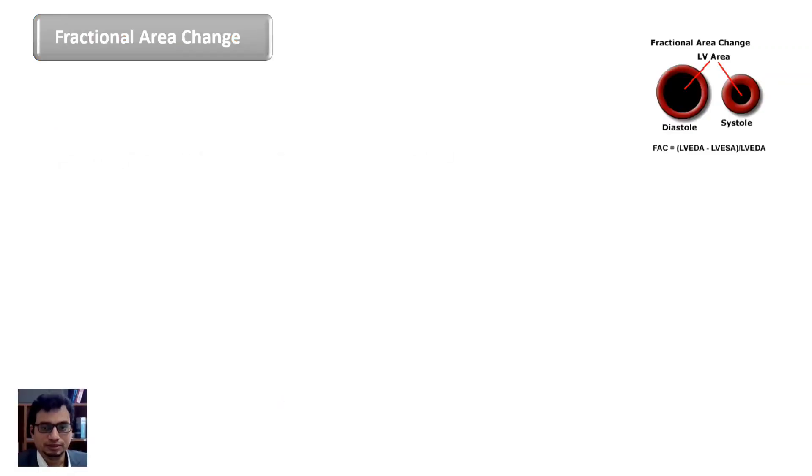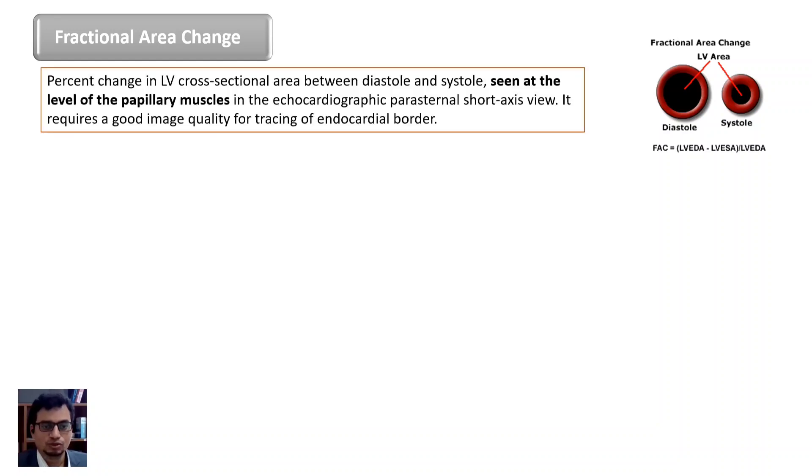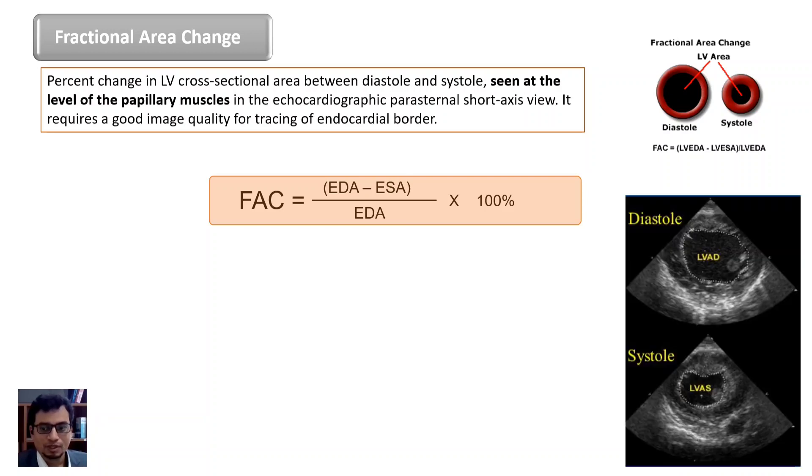Therefore a new method based on area measurement was developed. The fractional area change which is a two-dimensional measure of LV global systolic function. It is seen at a level of papillary muscles in the parasternal short axis view and is calculated as the difference in the end diastolic area and end systolic area divided by the end diastolic area.